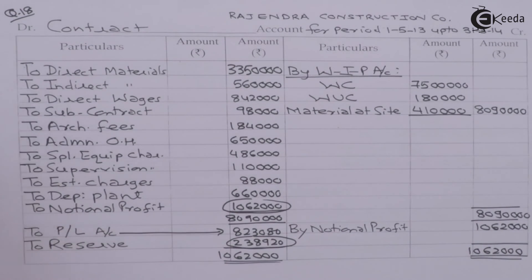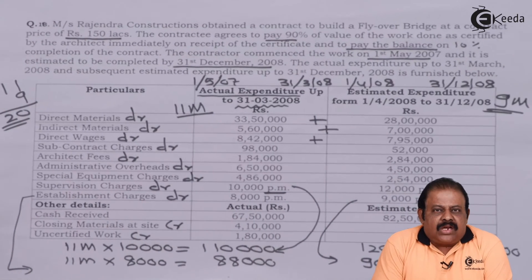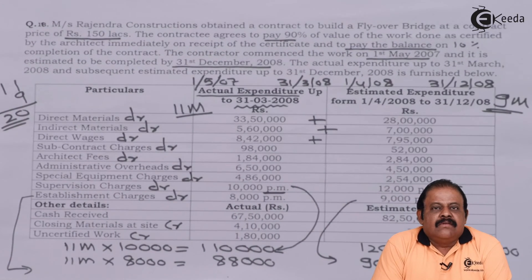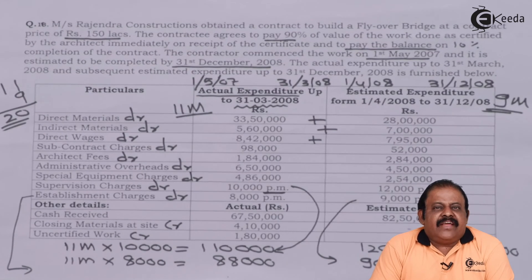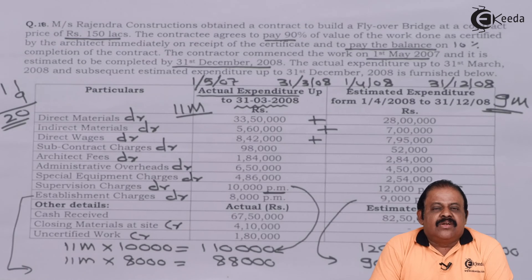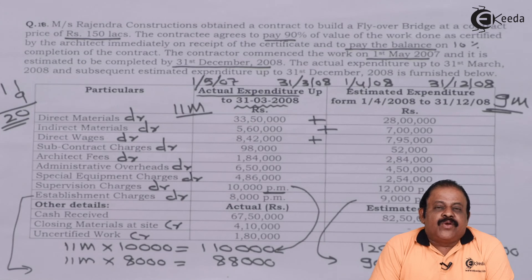In this question, we have learned how to calculate provision for contingency on total cost of the contract excluding such provision. If it is given as including such provision, then we are required to do a calculation to include that amount of provision for contingency in the total cost and proceed accordingly. Thanks for watching this video. Stay tuned with Ekida and subscribe to our channel. Thank you.